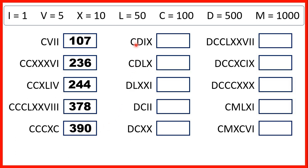Now we have C before D, so that's 100 before 500, which is 400. And we have I before X, so that's 1 before 10, which is 9. So our number is 409.